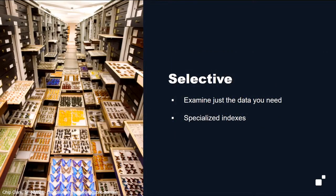Search is selective. This is not the Hadoop perspective. The Hadoop perspective is: I will send forth an army of workers, open every single drawer until I get the one with the Morpho butterflies and bring it back. Search says: I've got an index for that. I know exactly which drawer has the Morpho butterflies — I will pull it out and bring it back to you. That's not unique to search — most databases have that perspective — but it is part of the search perspective.